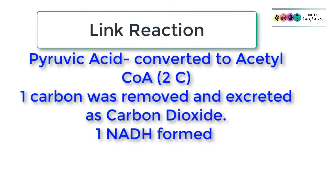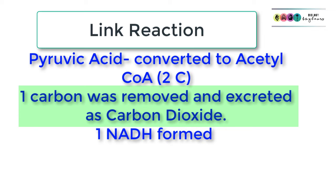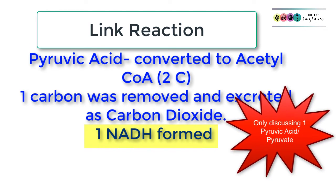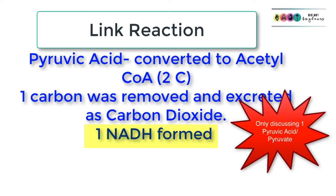To review the link reaction: pyruvic acid or pyruvate is a three-carbon molecule and it gets converted to a two-carbon molecule called acetyl-CoA. This is achieved by removing one carbon, which is excreted as carbon dioxide, and one NADH is formed. The same thing happens to the other pyruvic acid or pyruvate molecule.